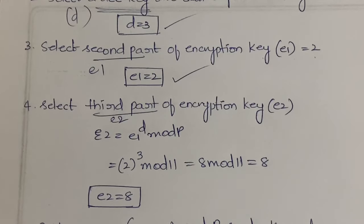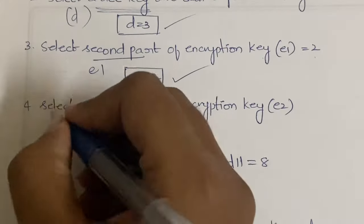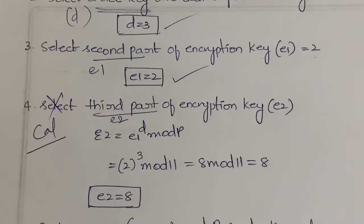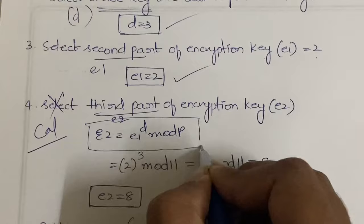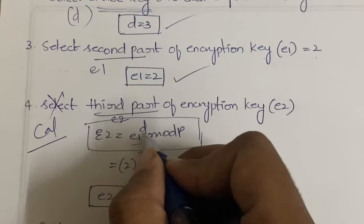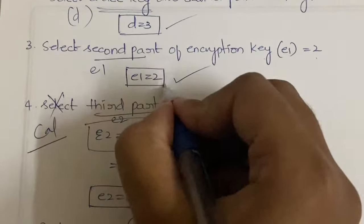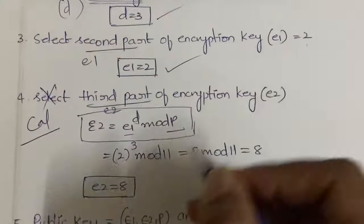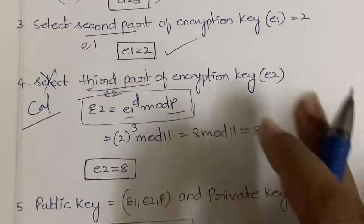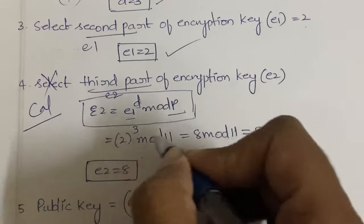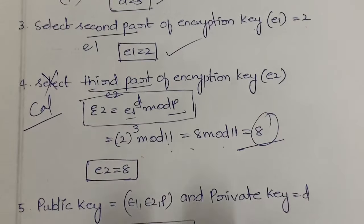In the fourth step, you calculate e2. You are not assuming it — you calculate it from existing values. e2 = e1^d mod p. We have e1 = 2, d = 3, and p = 11, so e2 = 2^3 mod 11 = 8 mod 11 = 8. We now have the value of e2 = 8.